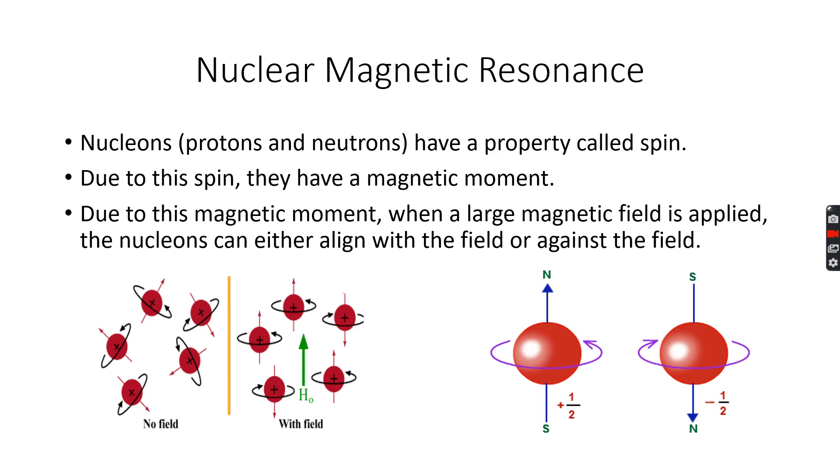So these are two energy states. One is aligning with the field, spinning such that it is aligned with the applied field, or it can spin aligned against the field. Now, why are these two energy states? I will explain to you.